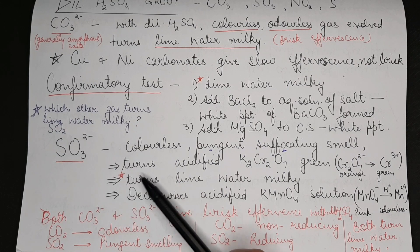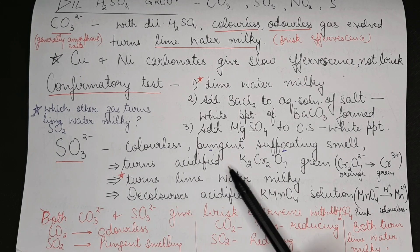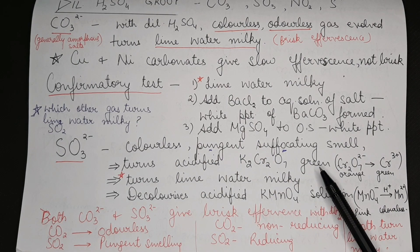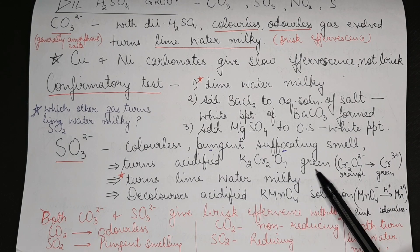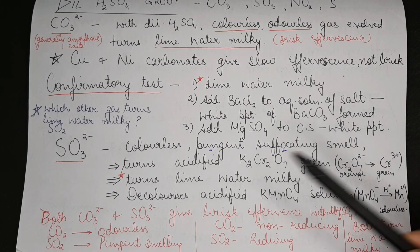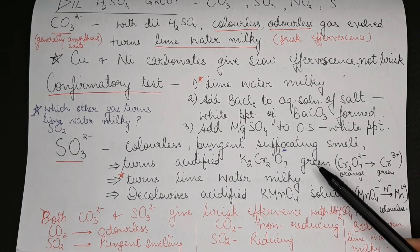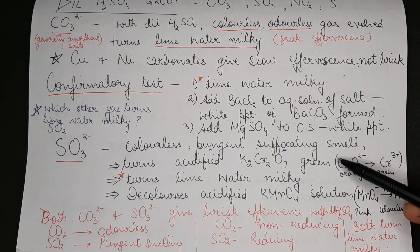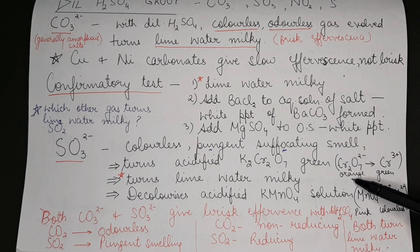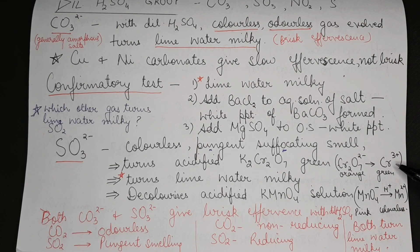This gas sulfur dioxide or a sulfite ion turns acidified potassium dichromate green. Everything related to this particular point children is very important, even for your theory exams. Just remember: acidified dichromate solution is orange-red in color. Acidified dichromate turns green due to reduction.